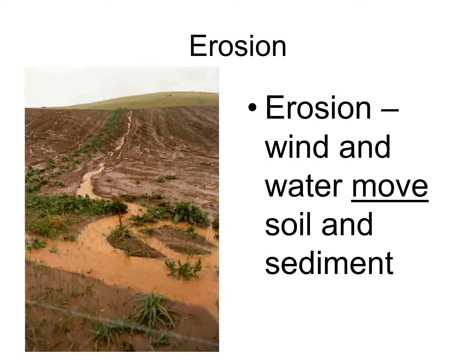Erosion. So now let's talk about erosion. Erosion is when the sediment moves. Wind or water is going to be moving the sediment. A river would be a really good idea — if it rains, you could take a picture of that. If there's a construction zone near your house and you see stuff going into the stream when it rains, that would be a good example of erosion.